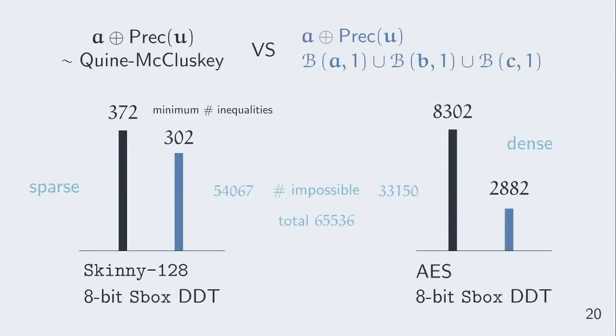Here are two results we got on 8-bit S-boxes with the two techniques, compared to using the Quine-McCluskey algorithm. In the first case of the Skinny S-box, we see that using the balls technique with the A plus Prec of U technique does not make a big difference when we try to compute the minimum number of inequalities. However, we see that for the AES S-box, we got a significant improvement.